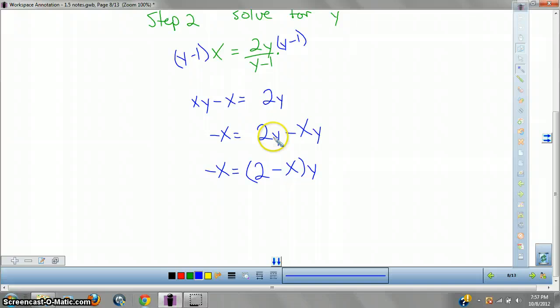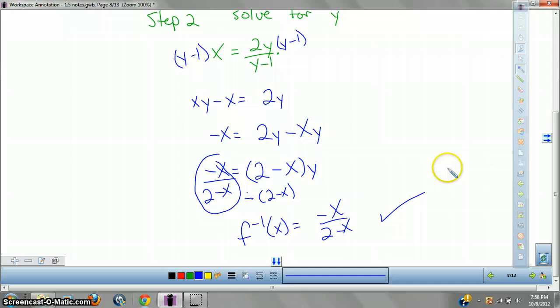So we go 2 minus X times Y. This is a tricky step for a lot of people. Whenever you get stuck in some sort of algebra like this, always get all your Y's to one side and factor it out. So now we're going to divide both sides by 2 minus X. And that's it. That's our answer right here. Our f negative one of X is going to be equal to negative X over 2 minus X. Voila! Okay, so that's our inverse.